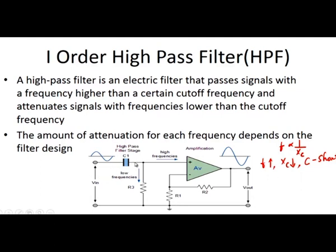If the capacitor is a short circuit, whatever signal is given at the input terminal will appear across the resistor, since there is simply a connection across the capacitor. The voltage present at the input signal is seen across the resistor for high frequencies. So the output voltage V0 equals Vi.